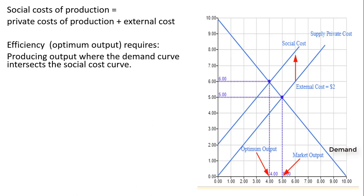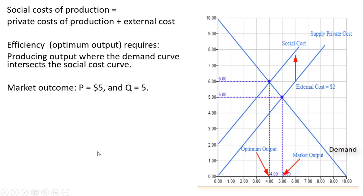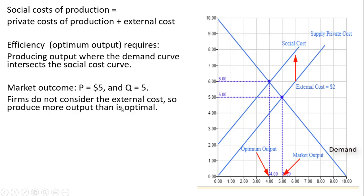Efficiency now occurs where the social cost curve intersects the demand curve — at a lower output level and a higher price. The market equilibrium is a price of $5 and quantity of 5. Firms do not consider the external cost, so they produce more output than is optimal. Firms don't have an incentive to consider this external cost — somebody else is paying it.